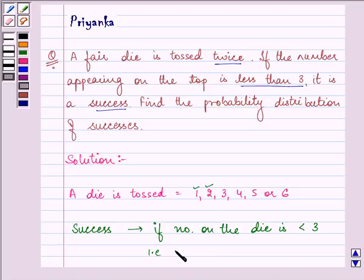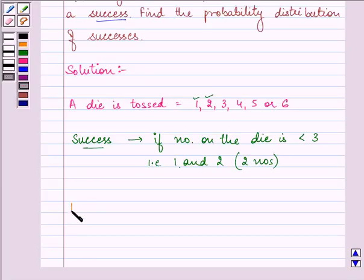That means there are 2 numbers in all that will appear on the top of the die to have a success. So, probability of success is 2 out of the total number that will appear as 6. So, that is equal to 1 by 3.